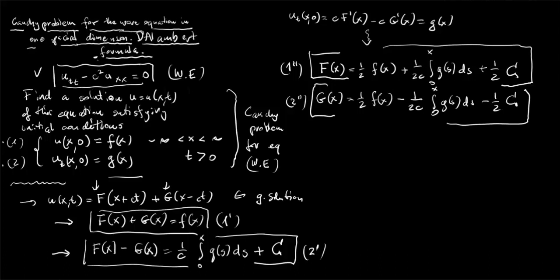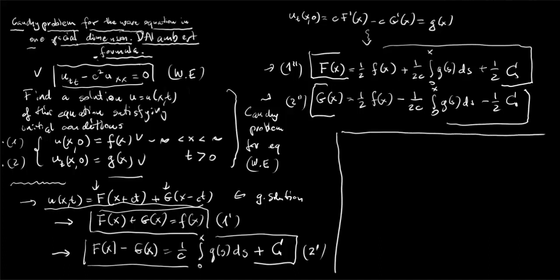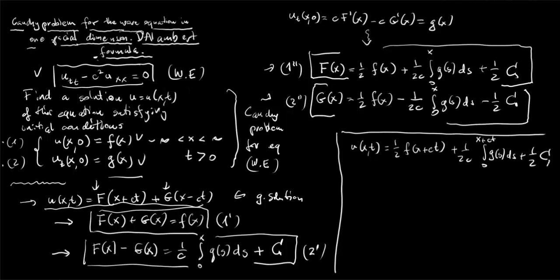So our initial conditions imply that capital F and capital G in the general solution must be of this form. Therefore, the solution satisfying our Cauchy problem must be: substituting x plus ct for x in F gives F(x + ct), which expands to one half f(x + ct) plus (1/2c) times the integral from 0 to x plus ct of g(s) ds, plus the constant term; similarly for G(x minus ct).